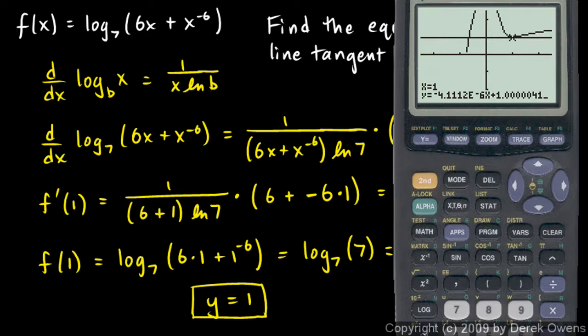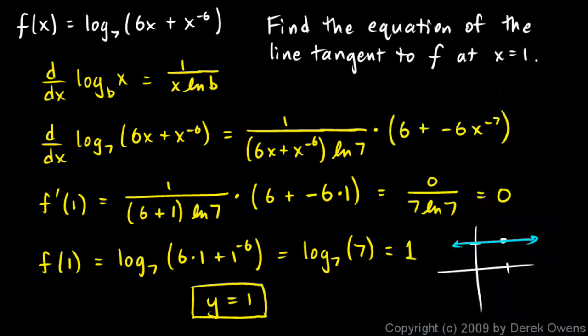So this is the line, or the numerical approximation to the line y equals 0x plus 1, which is simply what we got right here, y equals 1. So what we get doing the math here matches up with what we see on the calculator. And that's good.